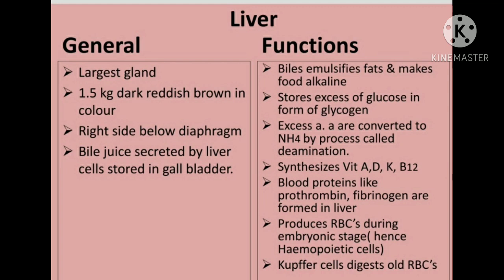The duct of the gallbladder and hepatic duct together form the common bile duct. Liver is a vital organ. Bile secreted by the liver emulsifies fat and makes the food alkaline. Emulsification means converting complex substances into smaller particles — chopping fat down into smaller particles.